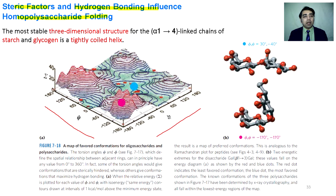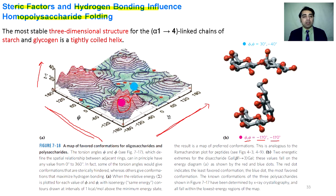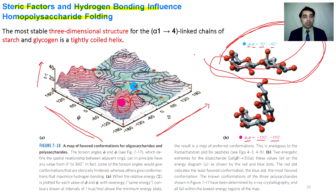Steric factors and hydrogen bonding influence the conformations of homopolysaccharides. A plot similar to a Ramachandran plot shows phi and psi angles of oligosaccharides with the z-axis showing energy level. Peaks correspond to high energy, sterically impossible conformations at phi and psi of minus 170 degrees. Sterically possible structures correspond to phi and psi angles of 30 and 40 degrees, shown at lower energy.